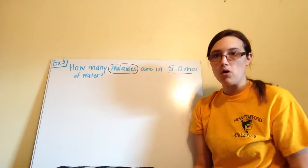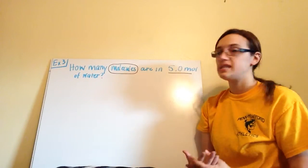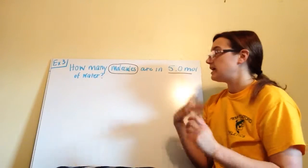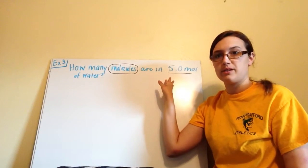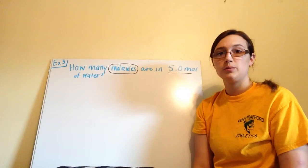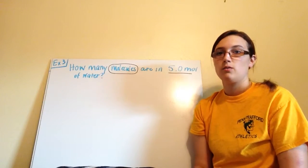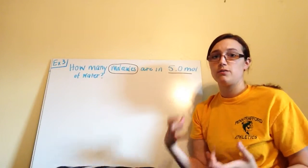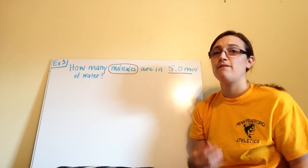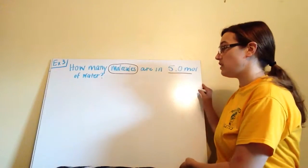So example 3 asks, how many molecules are in 5.0 moles of water? So again, what I did is I underlined my given piece of information, 5.0 moles, and I circled what the problem is asking me to find, which is molecules. So that's always the first thing that you should do. Find what the problem is asking for, find the given information that you know.